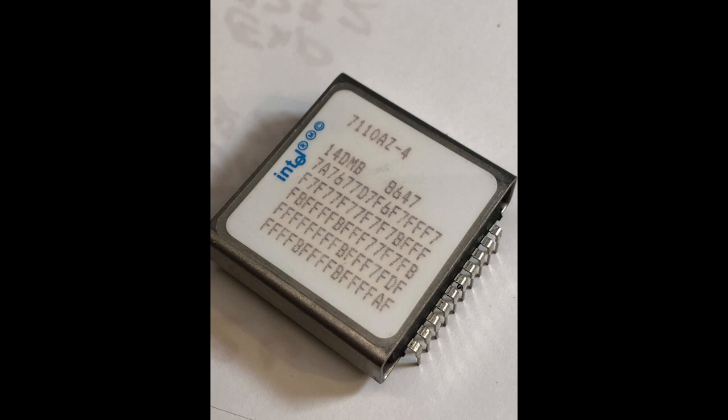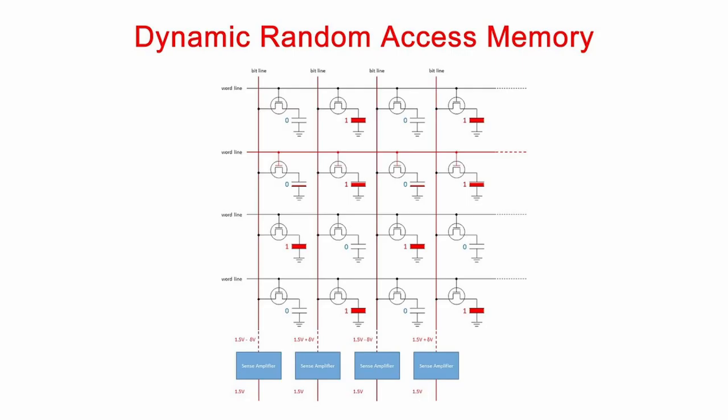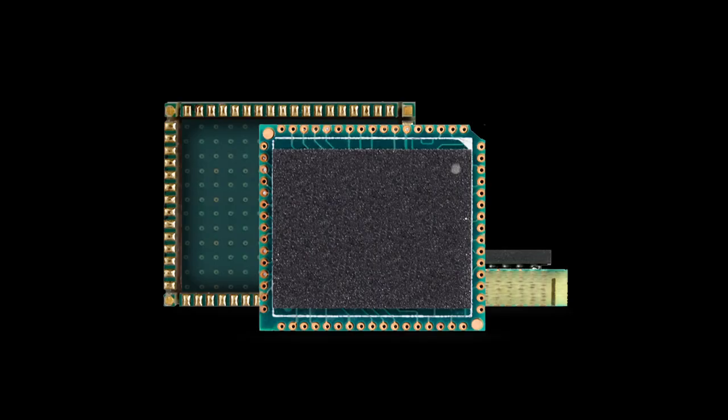In the mid-to-late 1970s, dynamic RAM, or DRAM, was invented. DRAM stored data in capacitors, which are electronic components that store electric charge. DRAM is a volatile memory. It was faster and more reliable than magnetic core memory, and it could store more data.